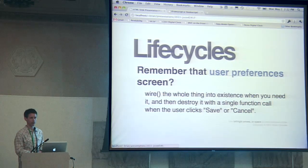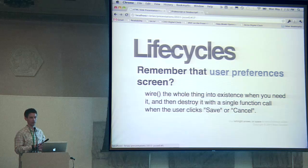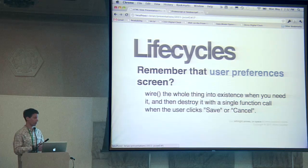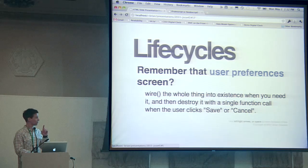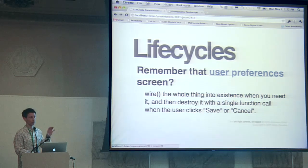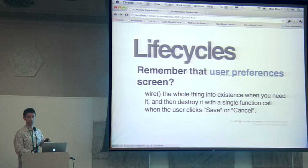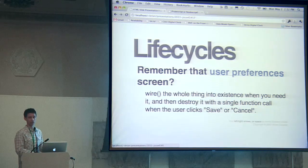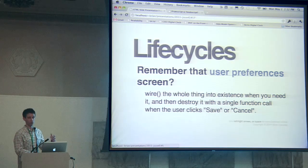Remember that user preferences screen we had to write a loader for — creating all the views and the controller, hooking them up, then remembering to destroy it all when done? You can wire that whole thing into existence with one line of code. You write a spec, wire it into existence, wire manages it all. The user interacts with it, clicks Save or Cancel, your controller then destroys the wired container, and all of that stuff goes away.